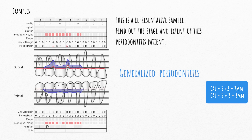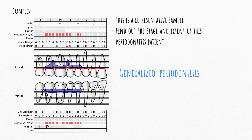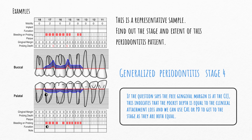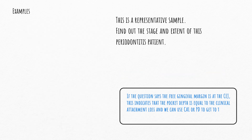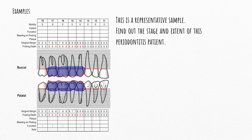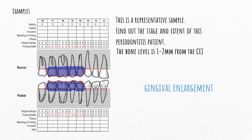What if, in addition to furcation class 2, we add mobility degree 2 on teeth 1.7 and 1.5? In that case, the diagnosis shifts to stage 4. What if the question says the free gingival margin is at the cementoenamel junction? This indicates pocket depth equals clinical attachment loss, so we can use either to determine the stage. Another example: if we have a large pocket depth of 8 on all teeth, but the bone level is 1 to 2 mm from the cementoenamel junction, this indicates no bone loss — meaning this is a gingival enlargement case, possibly due to a drug, and will not be diagnosed as periodontitis.